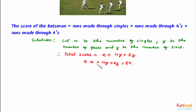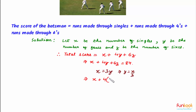But according to the question, we cannot have three variables here. We need to express the total score only in terms of singles and sixes, so we need to eliminate y. It is given that the number of singles, x, is equal to three times the number of fours, meaning x equals 3y. This implies y equals x divided by 3. Substituting this in, we get x plus 4 times (x/3) plus 6z equals 84. On simplification, this gives us 7x plus 18z equals 252. So this is the required equation.